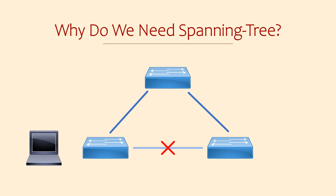The secondary part of Spanning Tree is to respond if there are problems or changes in the network. A link failure in this topology would leave one switch isolated with no way of reaching the rest of the network. So Spanning Tree will detect this change and adapt by enabling the link that it originally blocked.